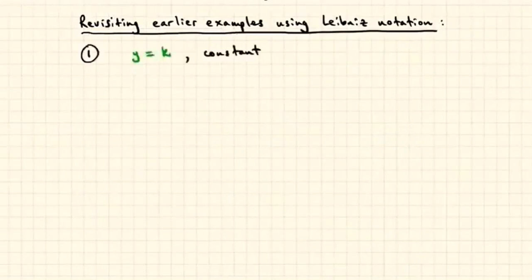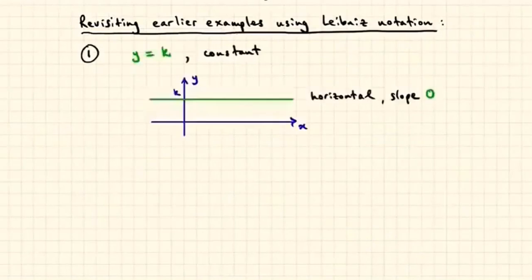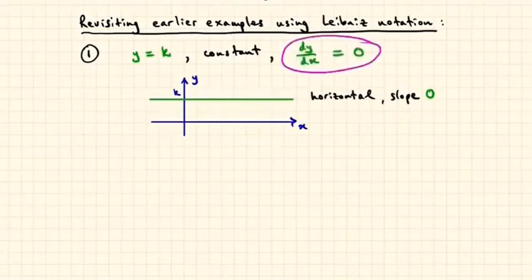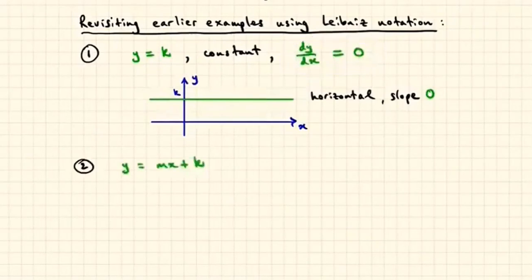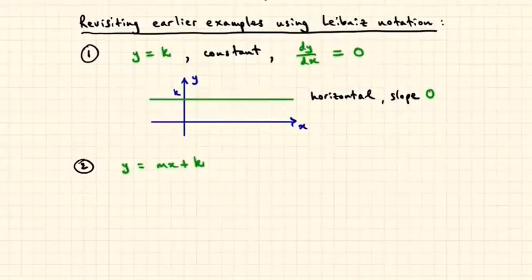Let's revisit some earlier examples and use the Leibniz notation to express the derivative. First, we take y equal to k, which is a constant — a horizontal line with slope 0. So we can say dy dx equals 0. Next, we take the line y equals mx plus k, which represents a line with gradient m. So we can say that dy dx is equal to m.